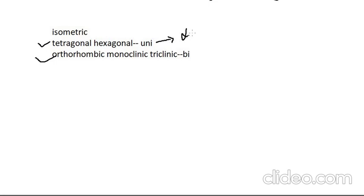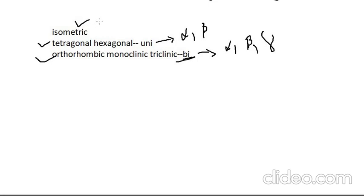In biaxial minerals, light entering the crystal splits into three defined directions — they have three refractive indices: alpha, beta, and gamma. In the isometric system, light does not split into defined directions — there is only one single refractive index. So uniaxial has two indices, biaxial has three, and isometric has one. We will cover this in more detail in later classes, but this is enough to solve the question.